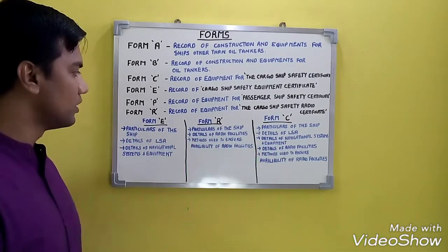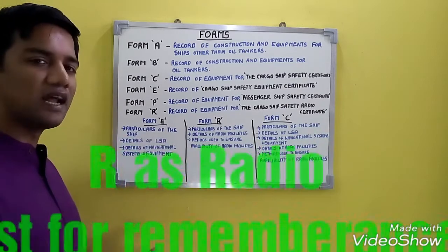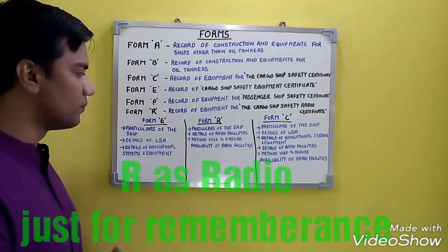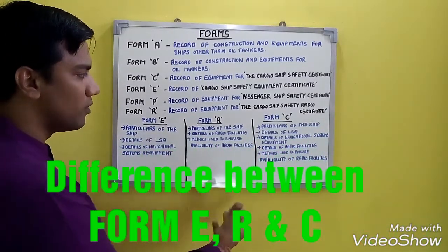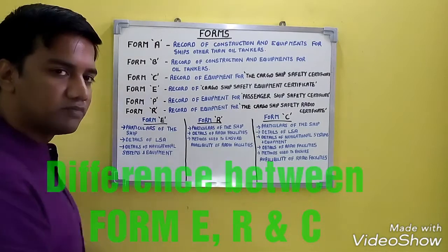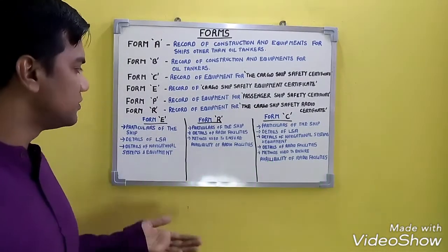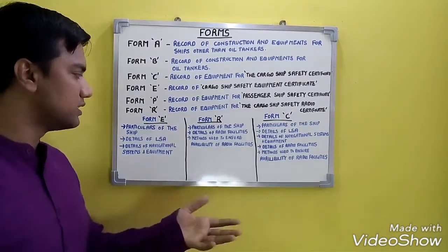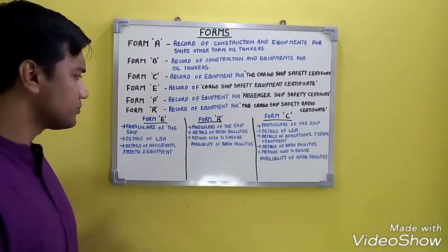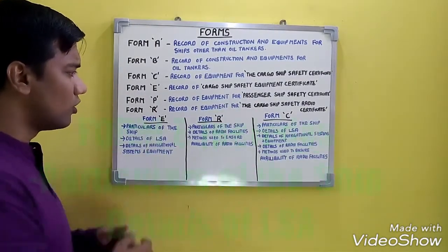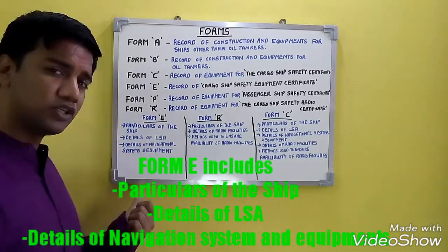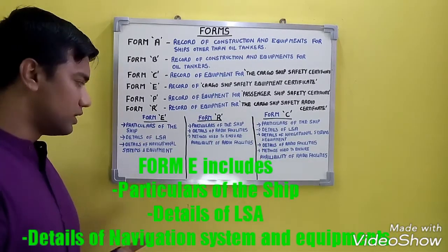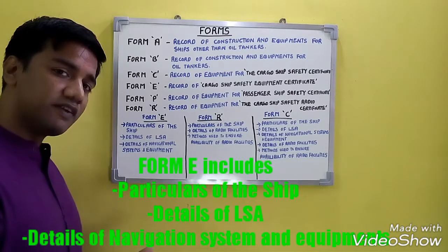Form R is the Record of Equipment for the Cargo Ship Safety Radio Certificate — remember R is for Radio. Now what is the difference between Form E, Form R, and Form C? The difference between Form E, R, and C is as follows.